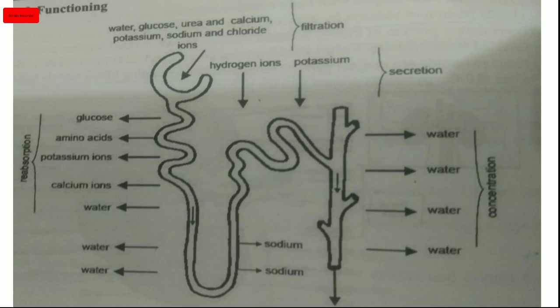After Bowman's capsule, glucose, amino acids, potassium ions, calcium ions, and water all undergo reabsorption in the proximal convoluted tubule. Then comes the loop of Henle — the descending limb is responsible for reabsorption of water, and the ascending limb is responsible for reabsorption of sodium ions. After that, the collecting tubule is responsible for reabsorption of water. Hydrogen ions are secreted — leading into the third step.